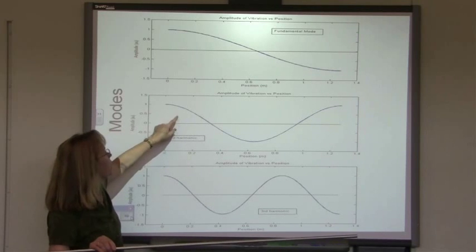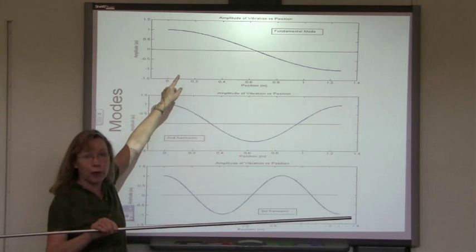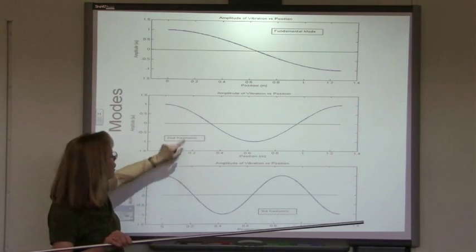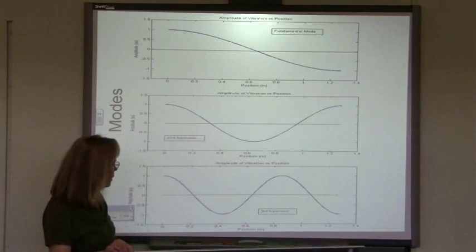In the second harmonic, instead of having half a wavelength along the rod, we have a full wavelength along the rod. So the mode shape looks like this.